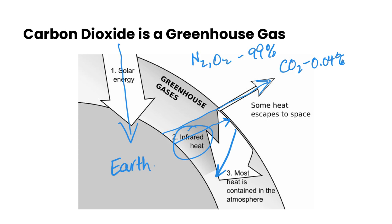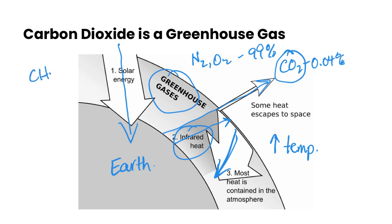Some of that infrared is going to be directed towards the Earth's surface. This becomes very problematic when we're adding carbon dioxide to our atmosphere from using fossil fuels, because that's going to increase the CO2 present, which increases the amount of infrared directed back to the Earth's surface, resulting in increased global temperature. There are other greenhouse gases too — things like methane, nitrous oxide, water vapor, and hydrofluorocarbons. But carbon dioxide is a particularly significant one, and one that we can do something about. As a result of the greenhouse effect and increasing greenhouse gas levels, average temperatures around the world are rising — this is known as global warming.